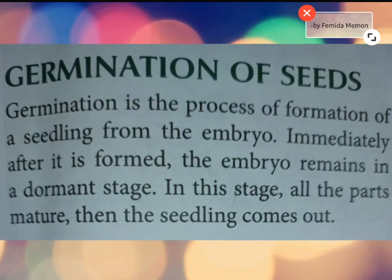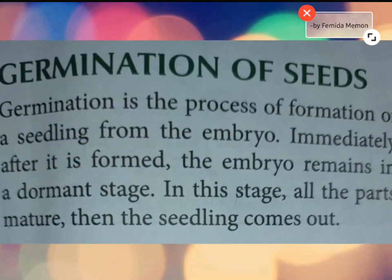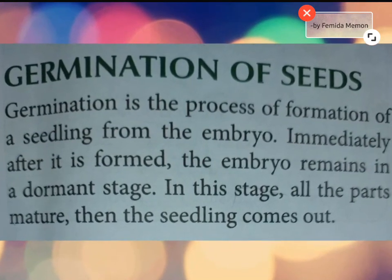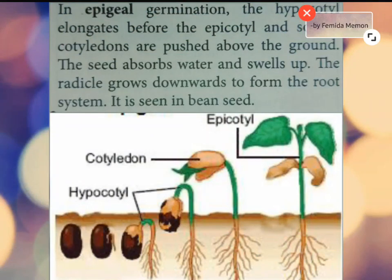Germination of seeds: germination is the process of formation of a seedling from the embryo. Immediately after it is formed, the embryo remains in a dormant stage. In this stage all parts mature, then the seedling comes out. There are two types of germination. In epigeal germination, the hypocotyl elongates before the epicotyl and so the cotyledons are pushed above the ground. The seed absorbs water and swells up. The radicle grows downwards to form the root system. It is seen in the bean seed.